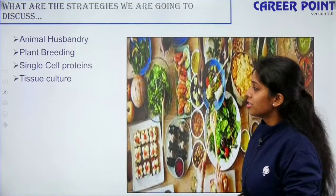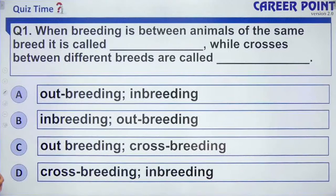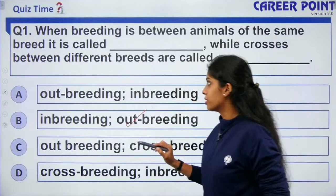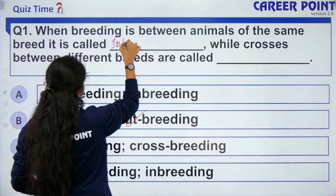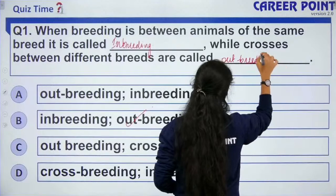Question: when the breeding is between animals of the same breed it is called dash, while crosses between different breeds are called as dash. The right answer is inbreeding and outbreeding. Breeding between animals of the same breed is inbreeding, and between two different breeds or species is outbreeding.